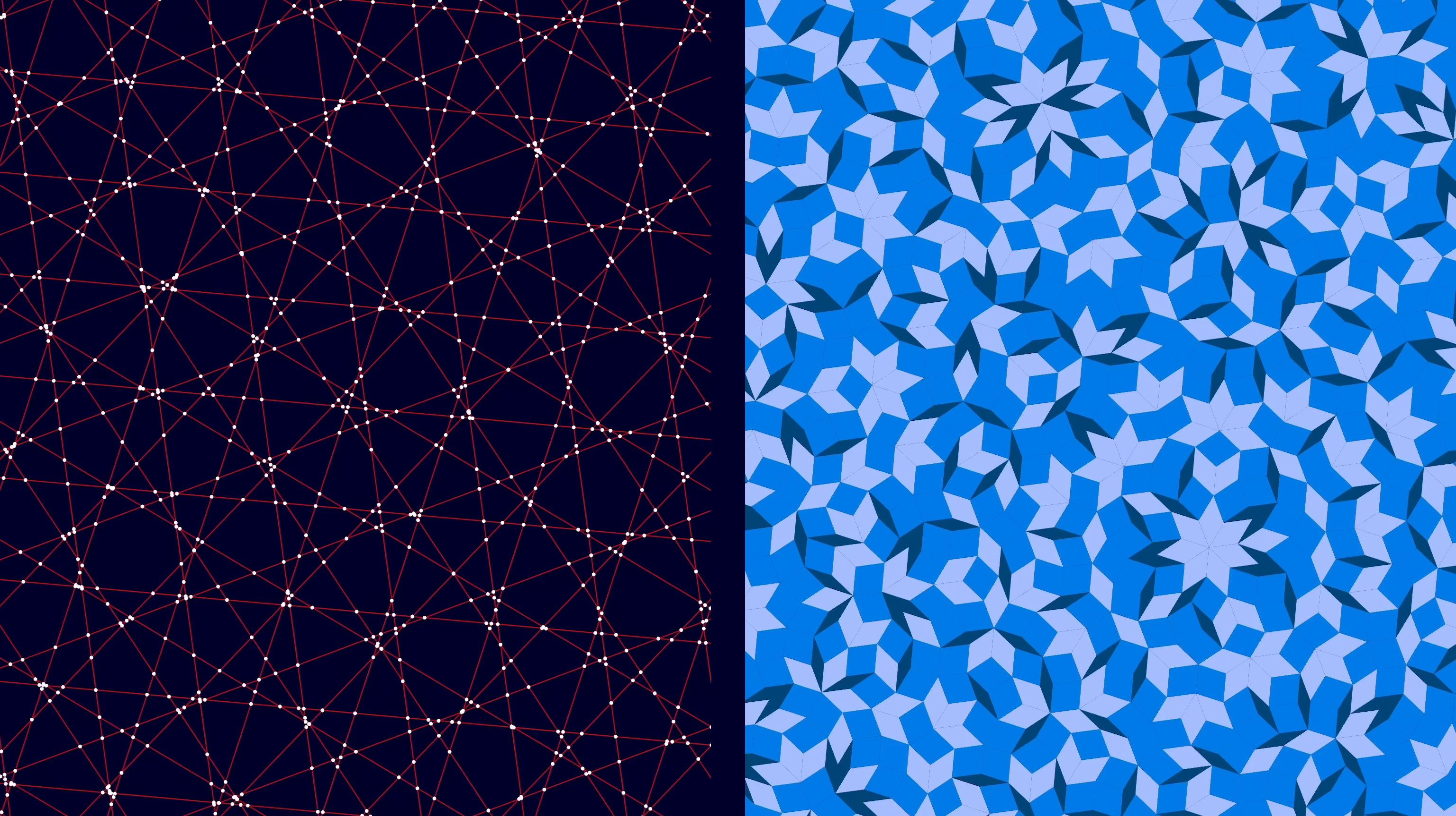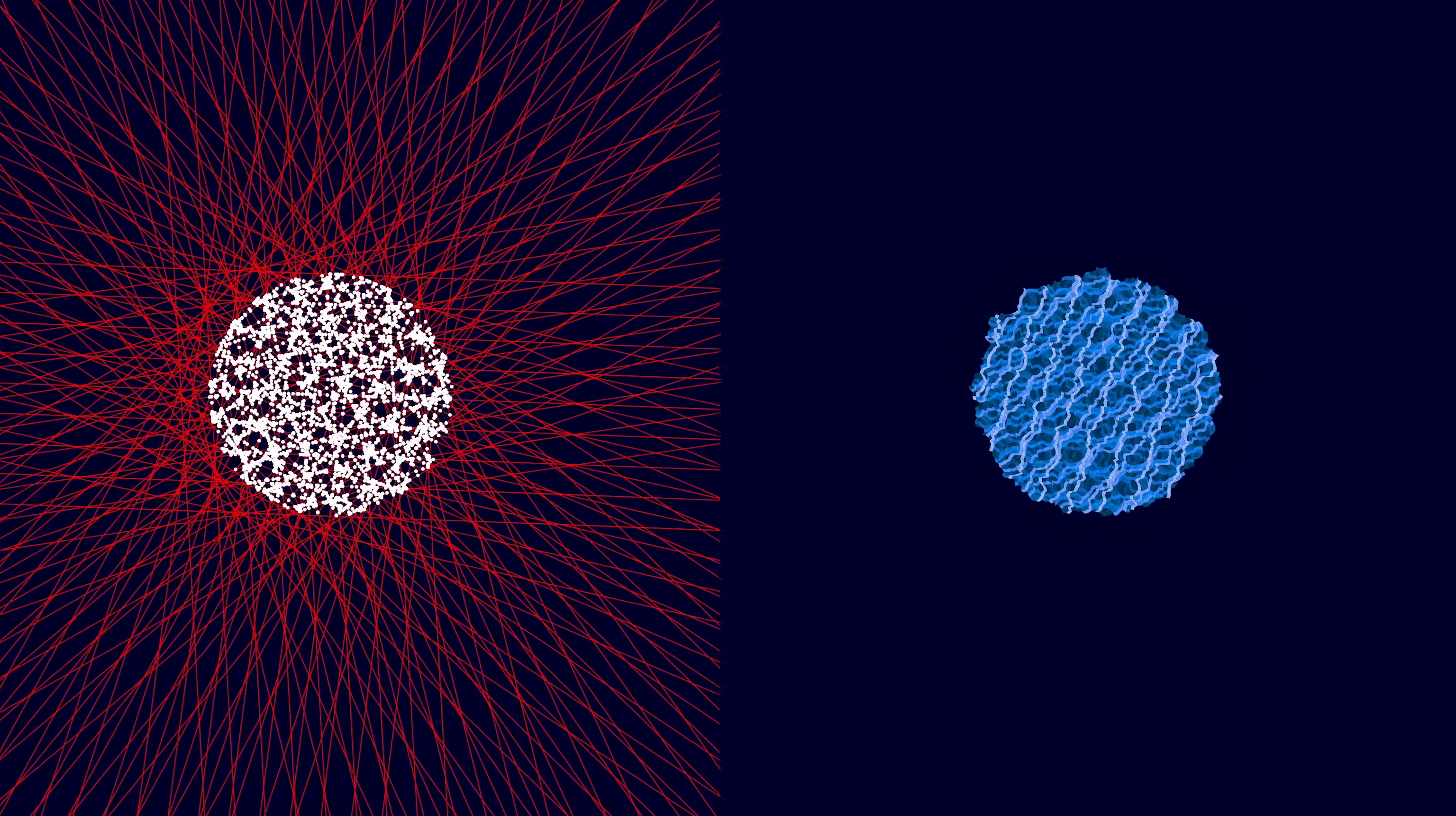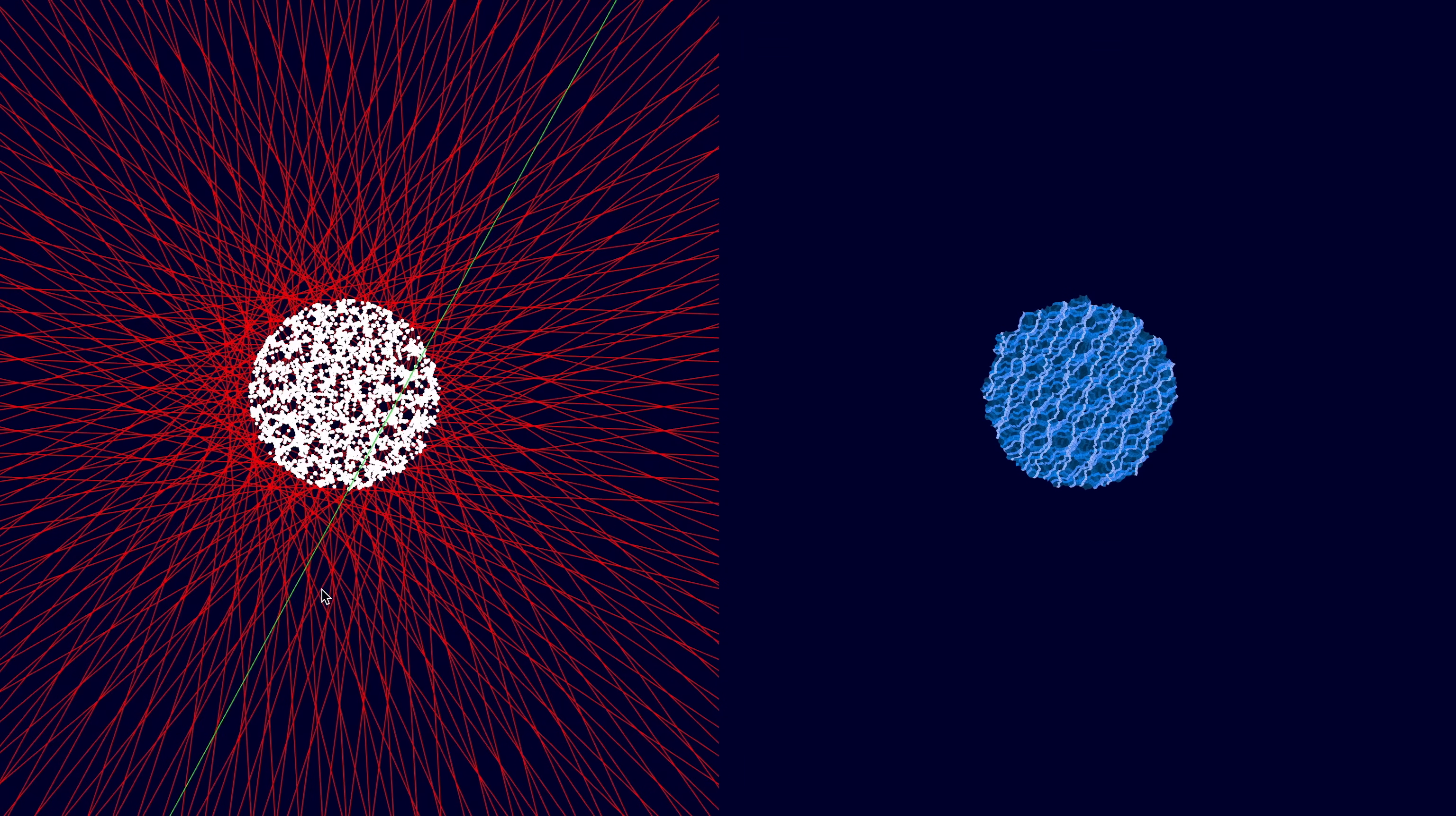Here's a heptagrid and its corresponding Penrose-like tiling. And here's an octagrid, a nonagrid, a decagrid, and so on. And that beautiful ribbony pattern we showed before was from a grid with 17 different sets of lines.